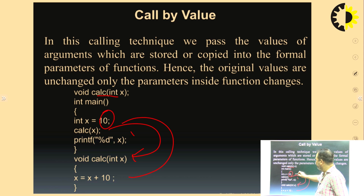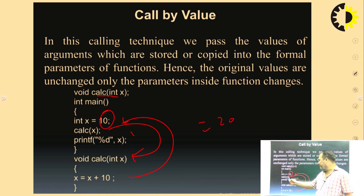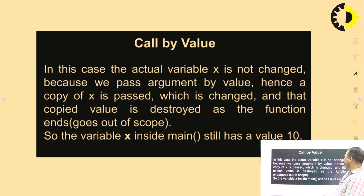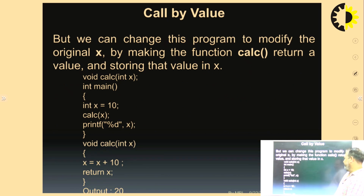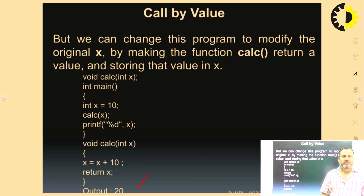Then again it will return here and print x. The output will be 20. This is called call by value — we simply pass the value as an argument, like here it passed 10. We can modify x inside the function so it becomes 20. However, in call by value, the actual variable x is not changing because we passed the argument by value. We can change the program to modify the original x by making the function calc return a value and storing it.